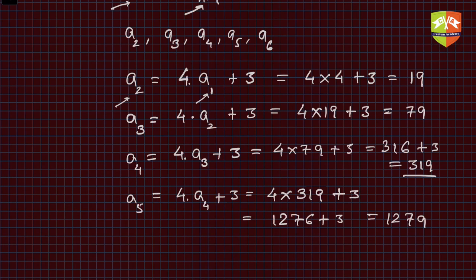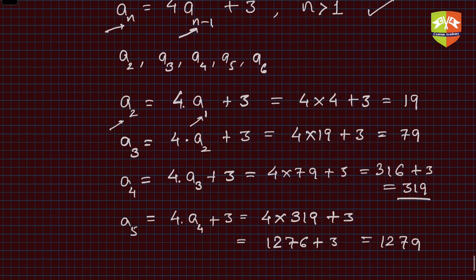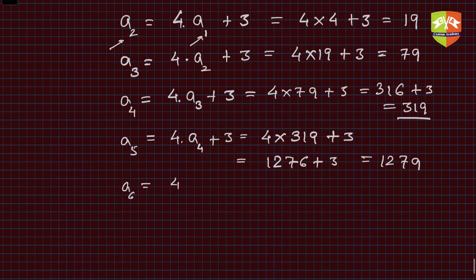What is a6? You have to find the next five terms, right? So a6 is 4 times a5 plus 3, which is 4 times 1279 plus 3. So let's multiply. 5116 will be 4 times 1279. Let's check it.